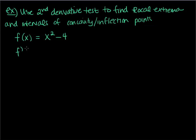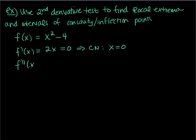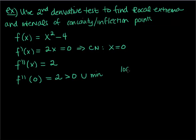So the first step again: I want to take the derivative. f prime of x is 2x, and I set this equal to zero to find possible critical numbers. My critical number is just x equals zero — divide both sides by two. Now my second derivative is 2. So I'm going to do the second derivative test. What does it tell me to do? Plug in my critical numbers. f double prime of 0 is 2 — my second derivative is 2 no matter what x is. Two is positive, so I'm concave up. That means I have a minimum at zero. So we have a local min of f of 0, which is negative 4, occurring at x equals 0.